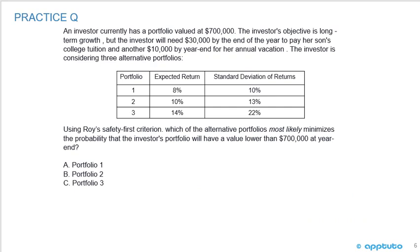One more practice question. An investor currently has a portfolio valued at $700,000. The investor's objective is long-term growth, but will need $30,000 by year end to pay college tuition, and another $10,000 for an annual vacation. The investor is considering three portfolios: portfolio one — expected return 8%, standard deviation 10%; portfolio two — expected return 10%, standard deviation 13%; portfolio three — expected return 14%, standard deviation 22%. Using Roy's safety first criterion, which portfolio most likely minimizes the probability that the portfolio value will fall below $700,000 at year end?